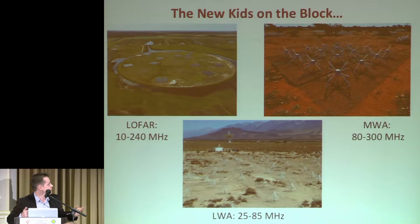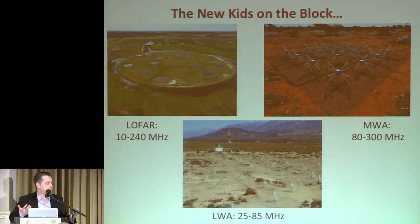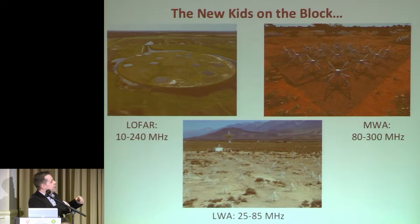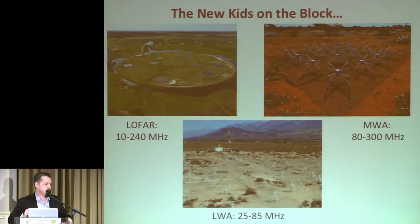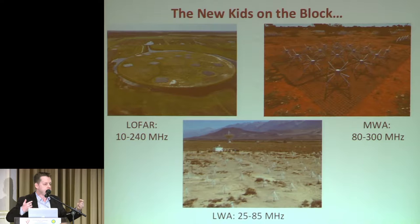There are trade-offs to be made. LOFAR has dipoles all across Europe, and if you wanted to image the entire sky with corresponding resolution, the images and processing would be far too expensive. So rather than combining every dipole with every other, they group dipoles into stations of 96 dipoles, giving a field of view of a few degrees. MWA groups dipoles into groups of 16, giving a much larger field of view of hundreds to 1,000 square degrees. In our array in New Mexico, we decided to combine every dipole with every other and image the entire sky every 10 seconds.